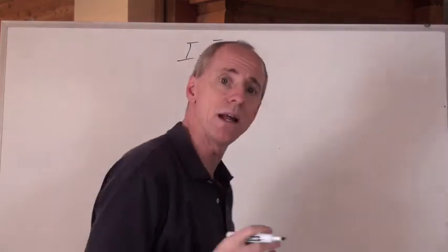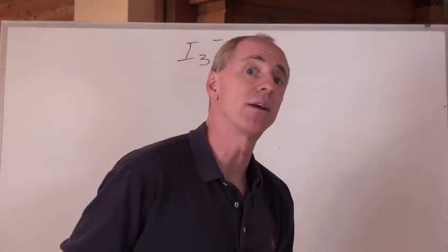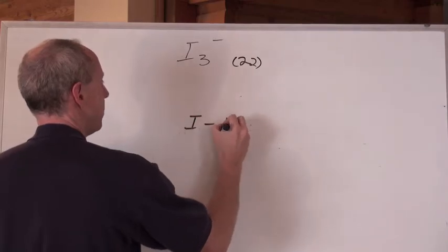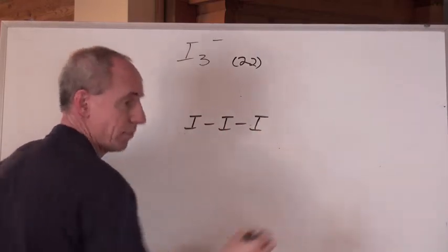that's group 7, times 3 is 21, but that extra electron makes 22. So this is going to be an ion, so we're going to put brackets around it in the end, remember? So, i3, well, my i attached to an i, attached to an i. Yep, nice job, that's good.